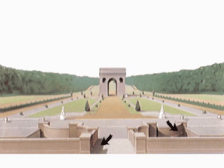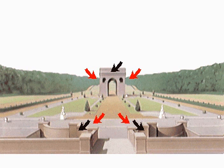If the outline of one object breaks the contour of another, the object with the broken contour appears farther away.